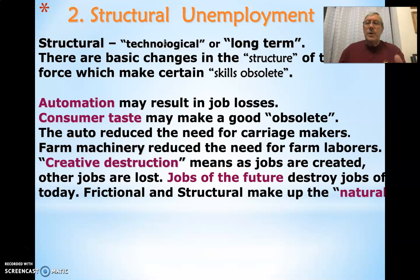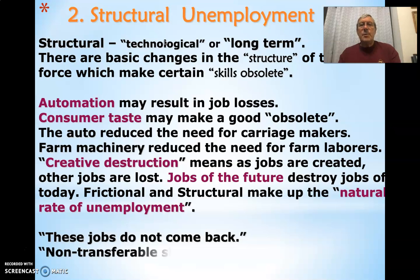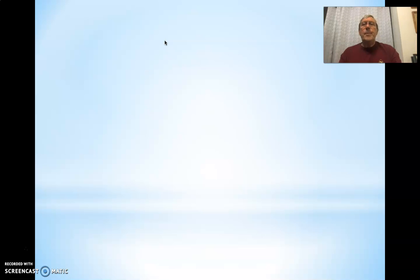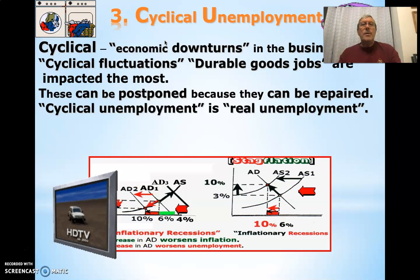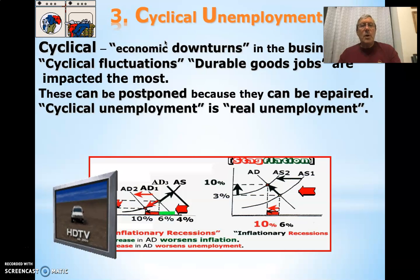Frictional and structural unemployment together make up the natural rate of unemployment — we're always going to have some unemployment. Some jobs come back and some do not, so the reality is we always have unemployment, usually around four percent. Cyclical unemployment occurs where there's an economic downturn in the business cycle. For example, a recession may begin and demand for automobiles decreases — that's an economic downturn — contributing to cyclical unemployment, as seen in the graphs below where aggregate demand decreases resulting in a new aggregate supply curve.